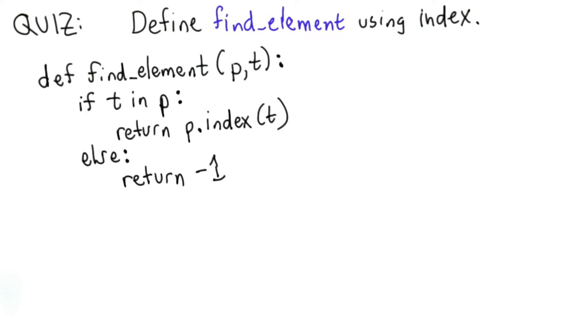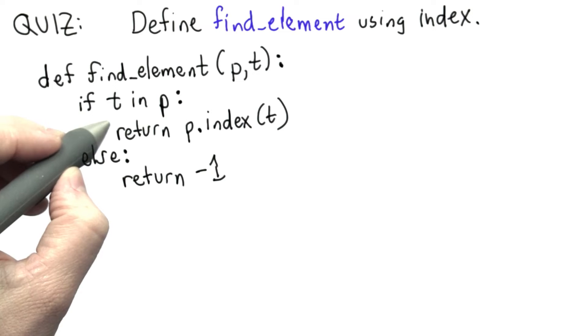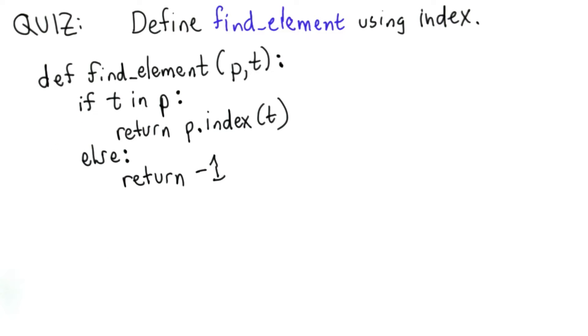So we can use an if statement, check that t is in p, using t in p. And then if it is, the block for the if returns that value. It returns p.index(t).